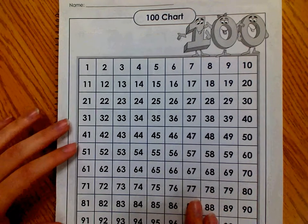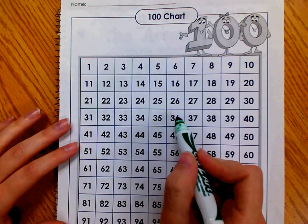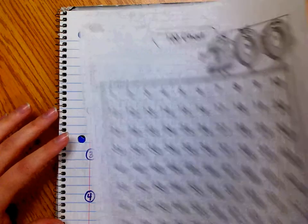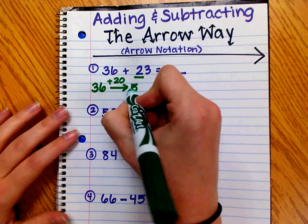Starting at the number 36 and adding 2 tens. 1, 2. Either way, they should figure out that 36 plus 20 is 56.